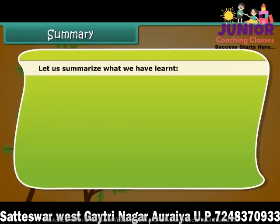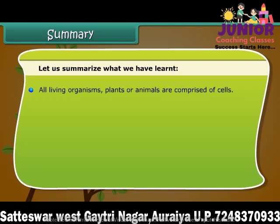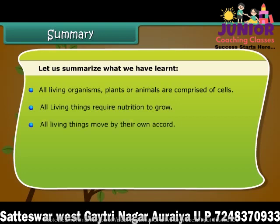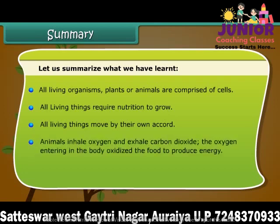Let us summarize what we have learned. All living organisms — plants or animals — are comprised of cells. All living things require nutrition to grow. All living things move by their own accord. Animals inhale oxygen and exhale carbon dioxide, and the oxygen entering the body oxidizes the food to produce energy. All living things have a limited life span.